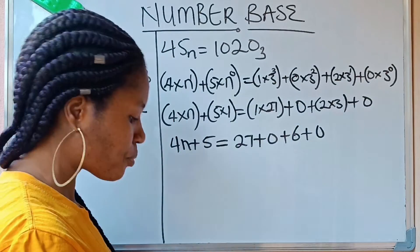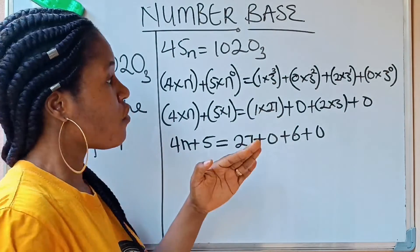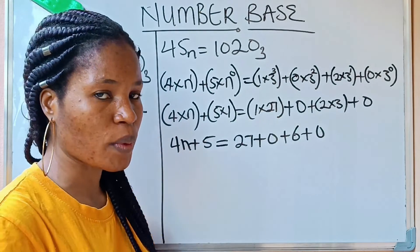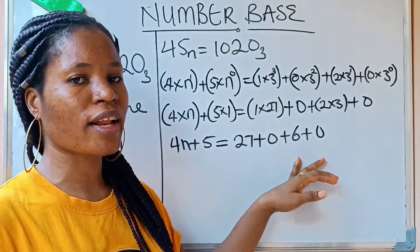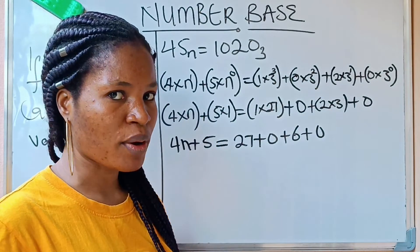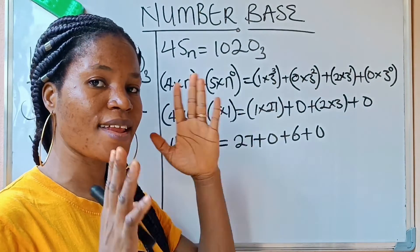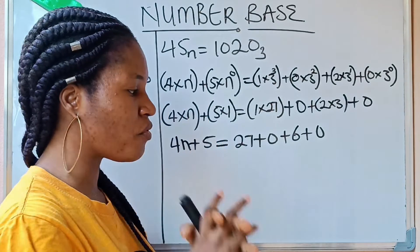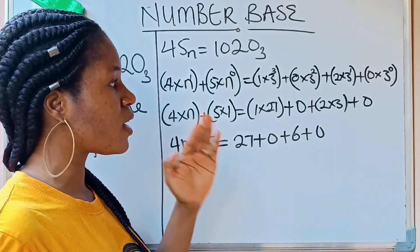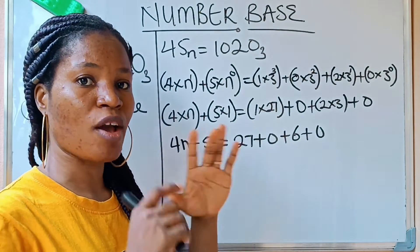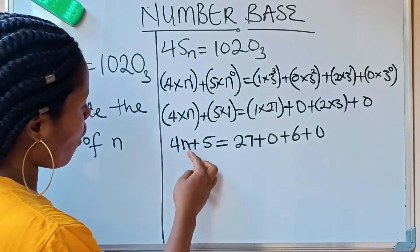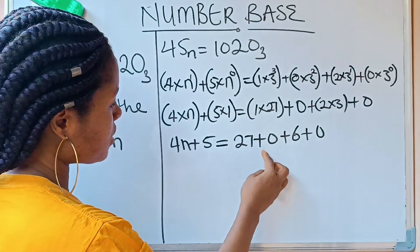If you are enjoying this, please click the subscription button and the notification bell so you will be notified anytime I upload a new video. Now continuing: 4n plus 5 is equal to 27 plus 0 plus 6 plus 0.